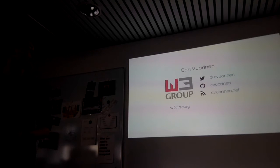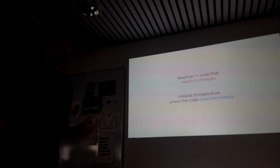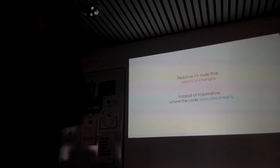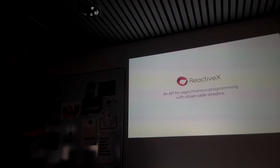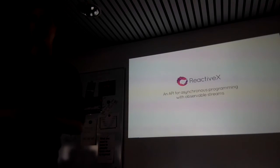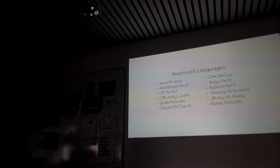Reactive — as the name implies — is code that reacts to changes, instead of imperative code that executes linearly. With that we have a project called ReactiveX, or just Rx. Its website says it's an API for asynchronous programming with observable streams, which is what we're going to learn about today. It's not only JavaScript-related — it's available for many different languages.